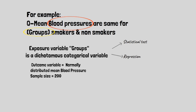To see which specific statistical test you could apply, we need to see the outcome variable which is a normally distributed mean blood pressure with a sample size of 200 patients.